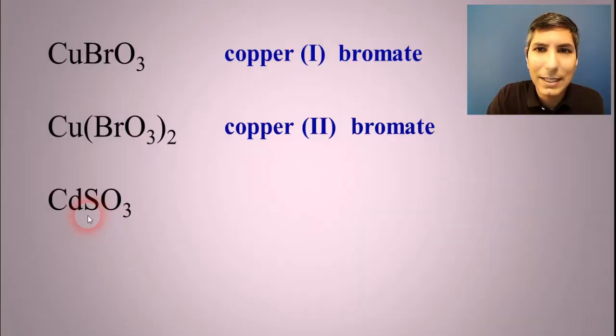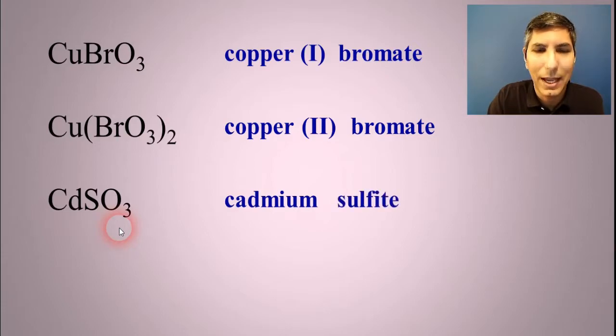How about CdSO3? Well, Cd is the symbol for cadmium and SO3 is the symbol for sulfite. So it's cadmium sulfite. Now cadmium is a transition metal, but notice it's one of those three that does not need the Roman numeral on there. So it's just cadmium sulfite. Cadmium is always plus two.